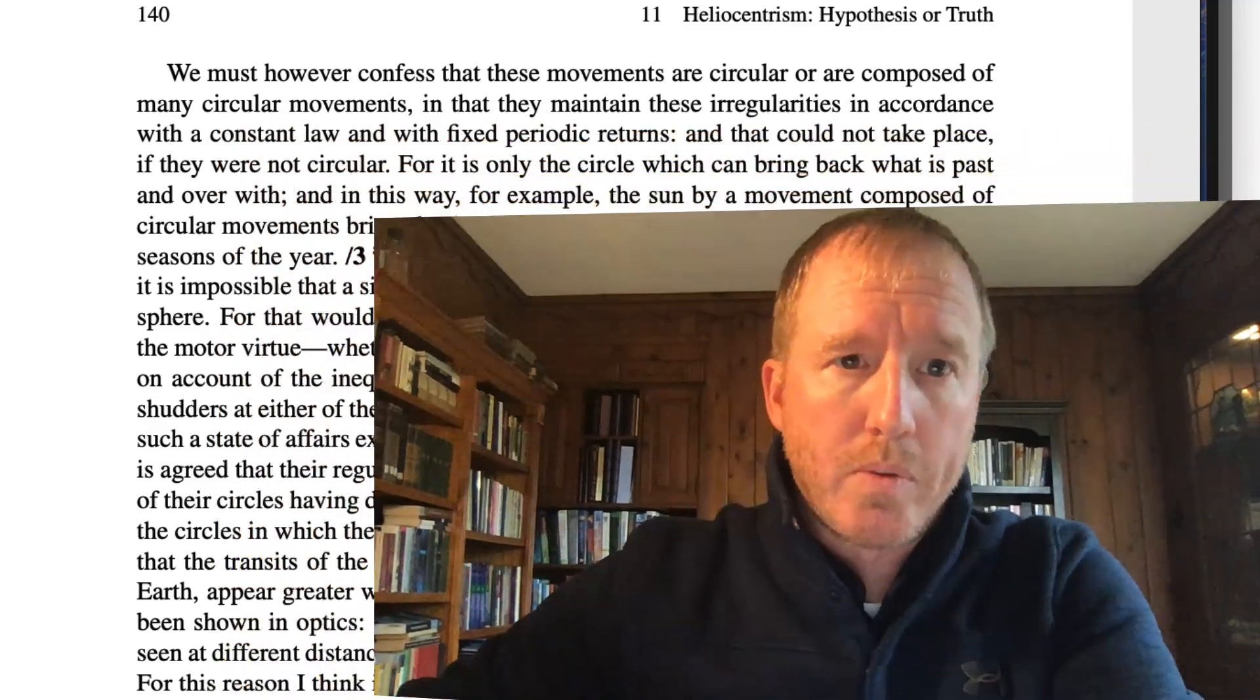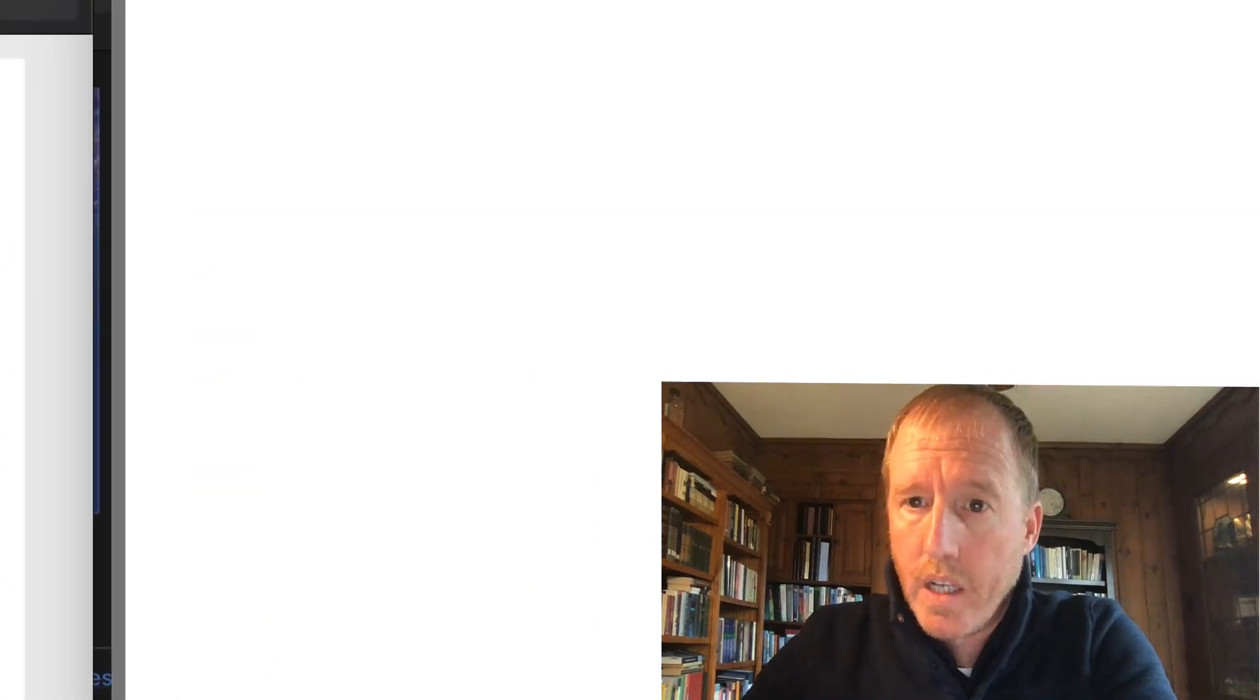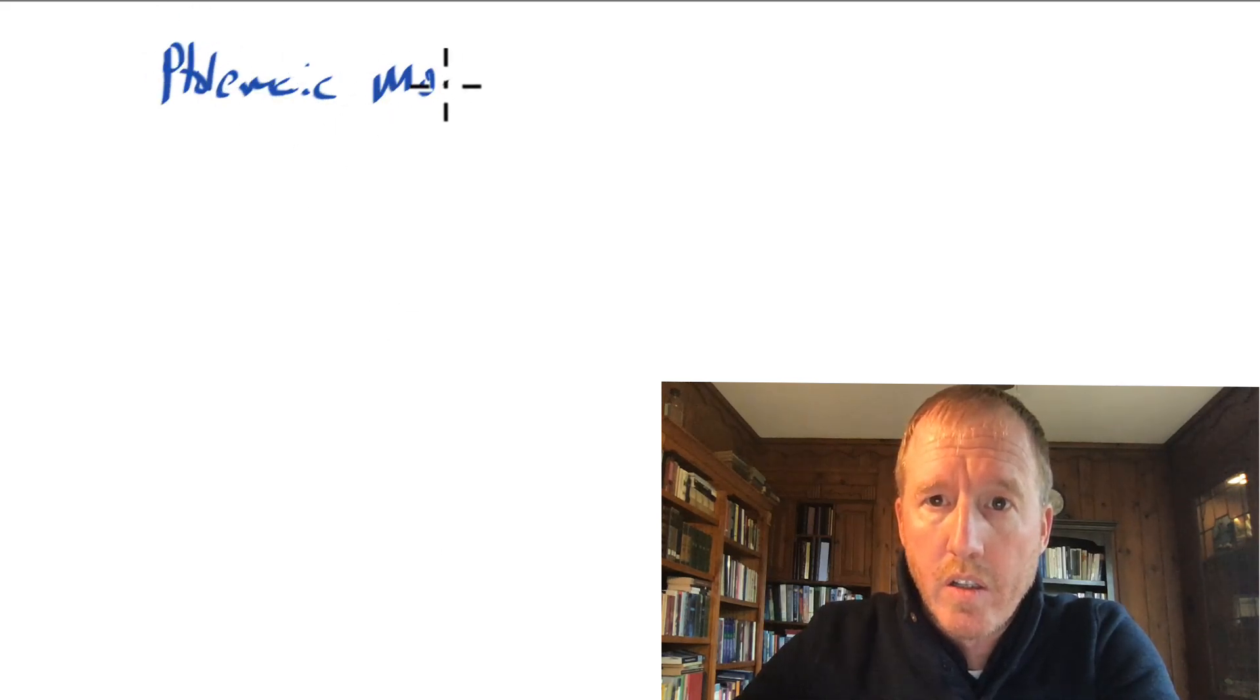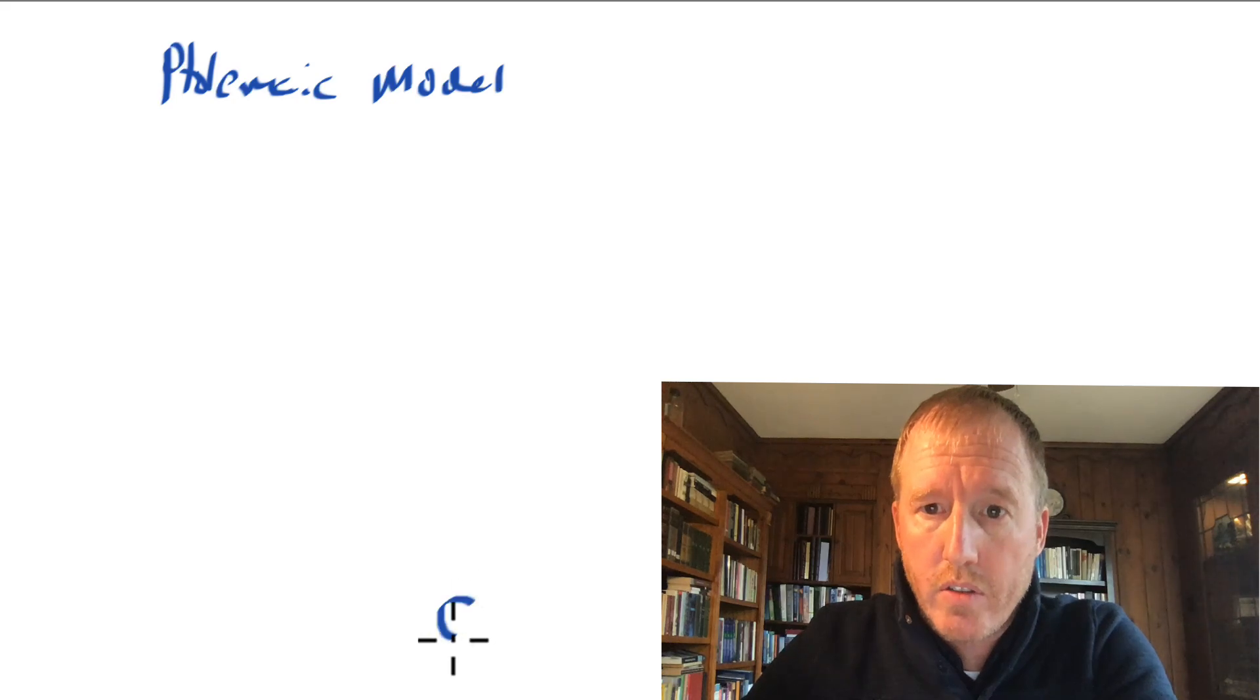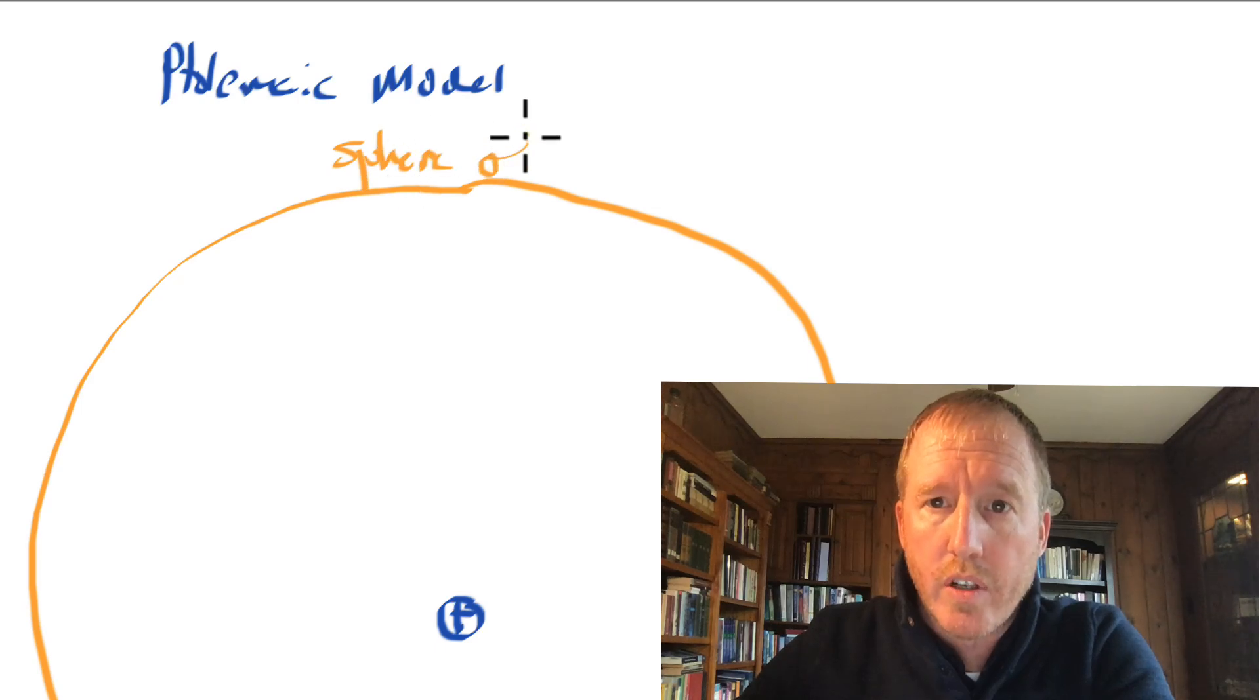This problem is even more pronounced when we talk about the motion of the planets. Before I leave chapter 11, I want to say a couple of things on the motion of the planets. If we put the earth, again, according to the Ptolemaic model, if we have the earth at the center of the celestial sphere, let me draw the sphere of stars way out here. This is the sphere of stars.